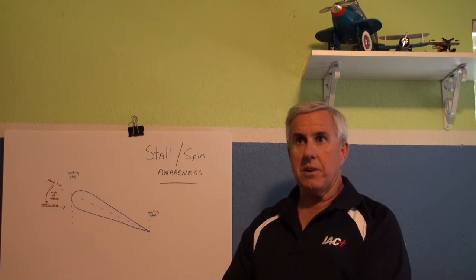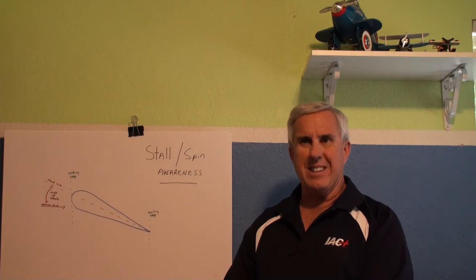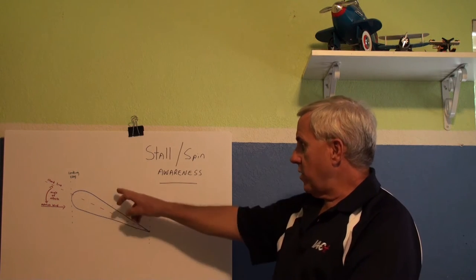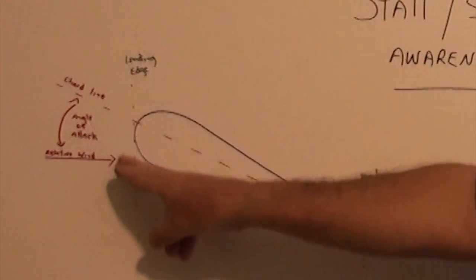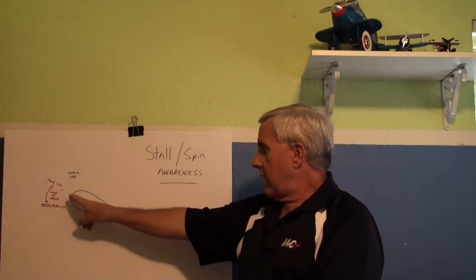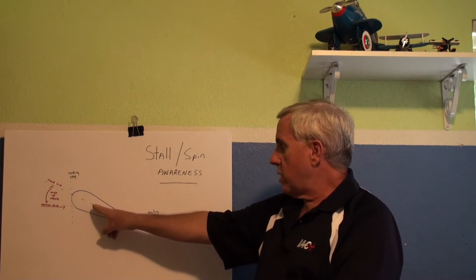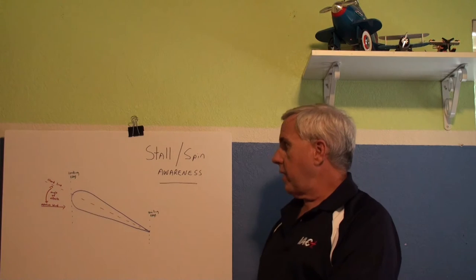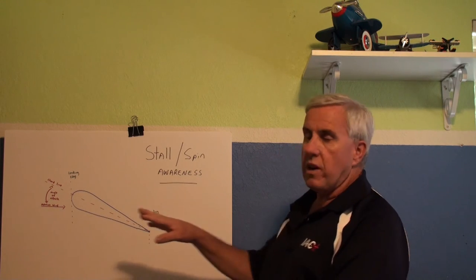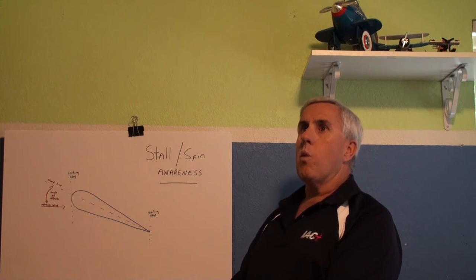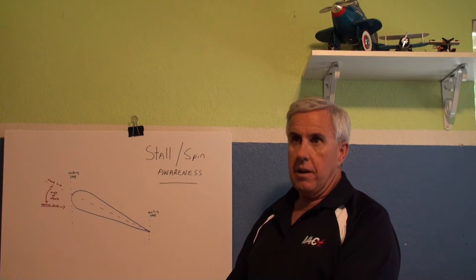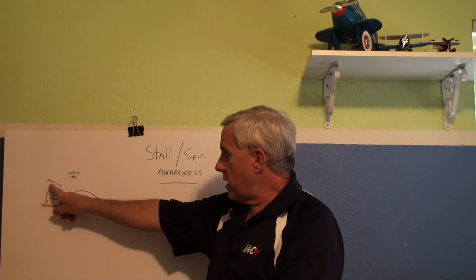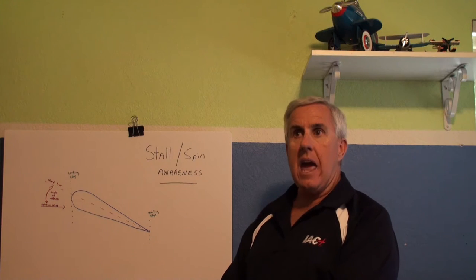Before we continue, let's talk about some definitions. We have our classic airplane wing here — the top section, the bottom section, the leading edge, and the trailing edge. If we draw a line equidistant between the top and bottom from the leading edge to the trailing edge, that's called our chord line. As the airfoil moves forward, it generates a relative wind in the opposite direction of motion and at the same velocity. The angle formed between the chord line and the relative wind is the angle of attack.